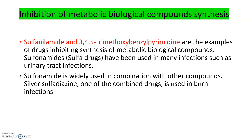Sulfonamides are used in many infections such as urinary tract infections, and are also used in combination with other compounds — for example, silver sulfadiazine, which is a combined drug used in burn infections.